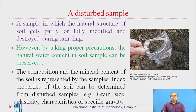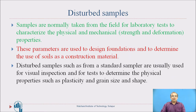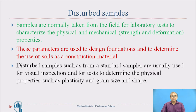Disturbed samples are used for laboratory testing such as grain size distribution, plasticity, and specific gravity. These samples are normally taken from the field for laboratory tests to characterize physical and mechanical properties — for example, strength and deformation characteristics. These parameters are used to design foundations and to determine the use of soil as a construction material.